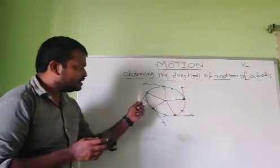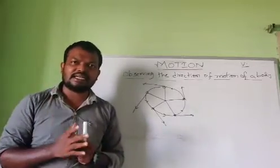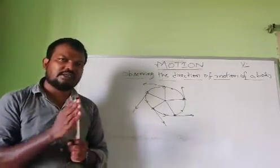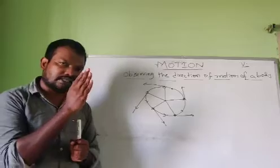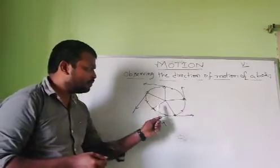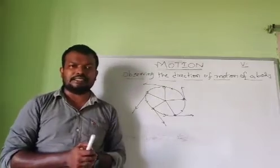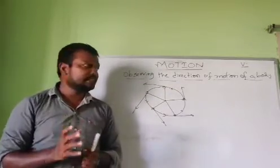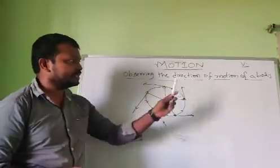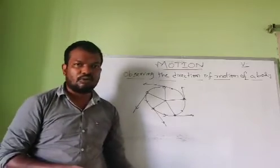So it is taking which direction? Tangential direction. The straight line which is touching only one point on the circle is called as a tangent. This is actually the concept about observing the direction of the motion of the body.